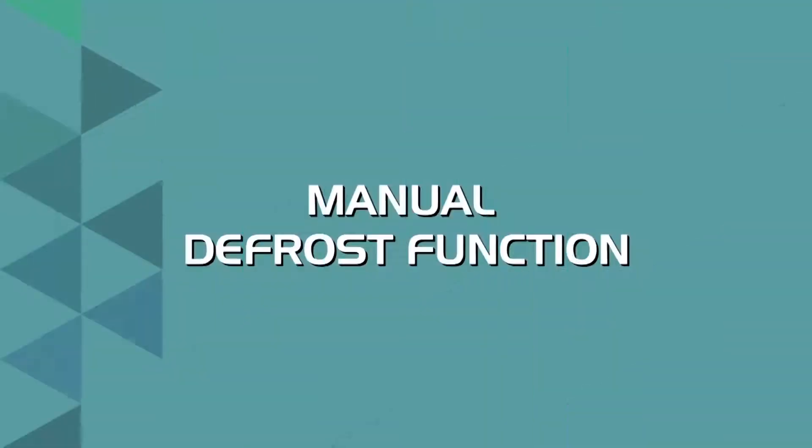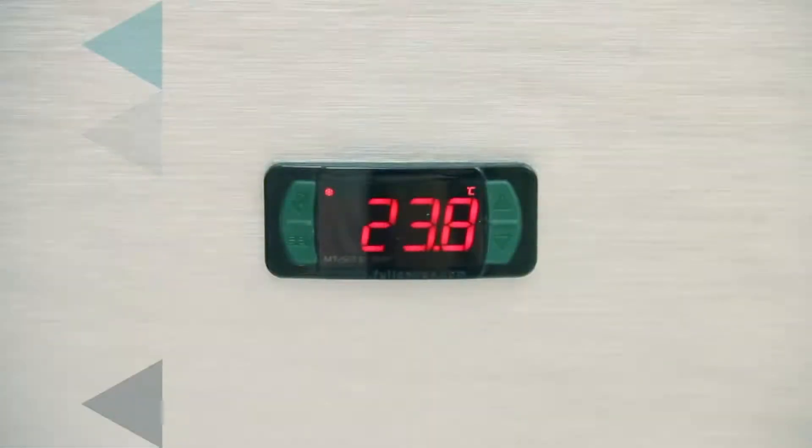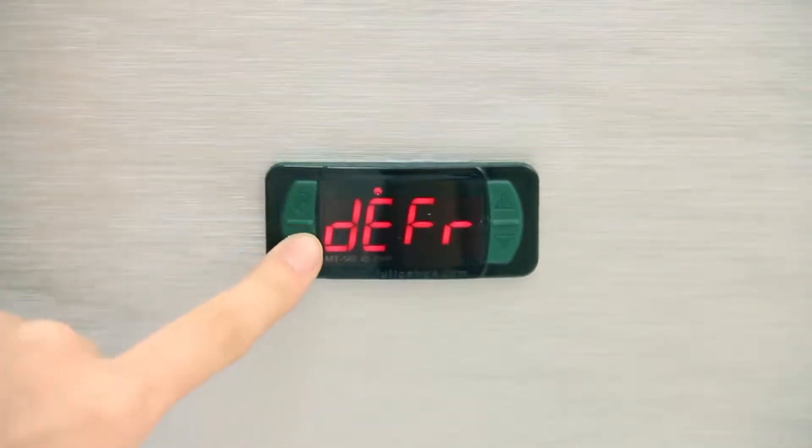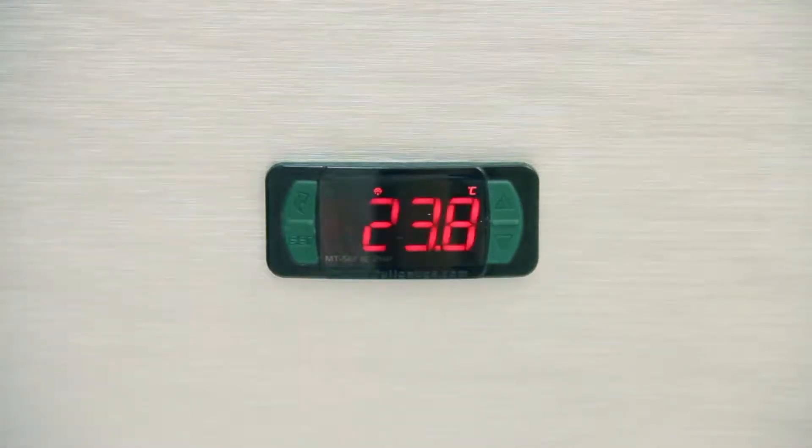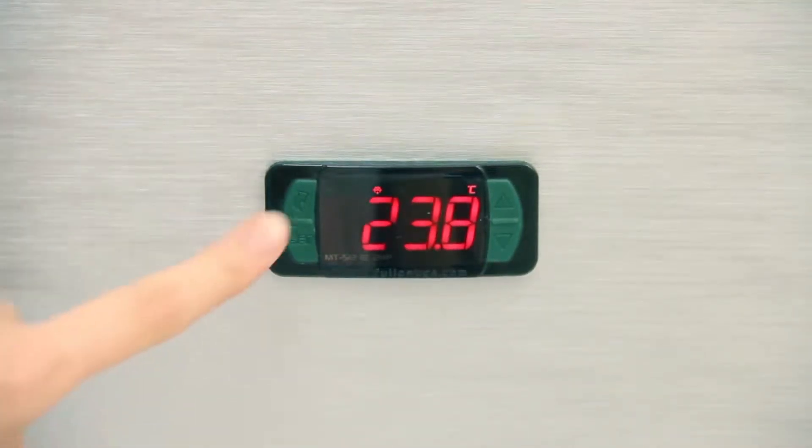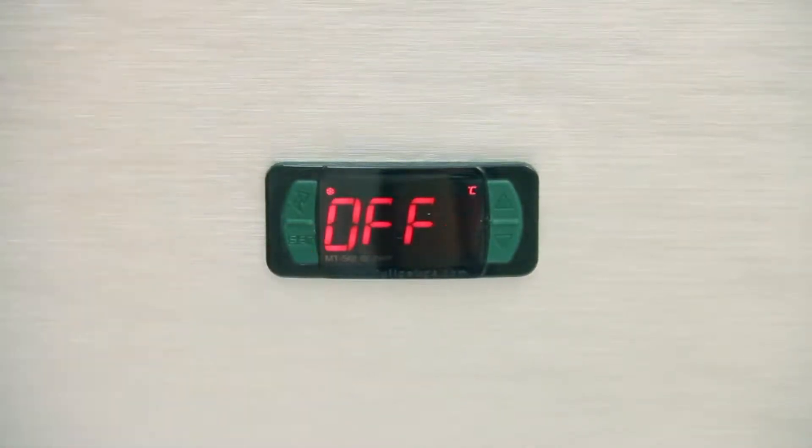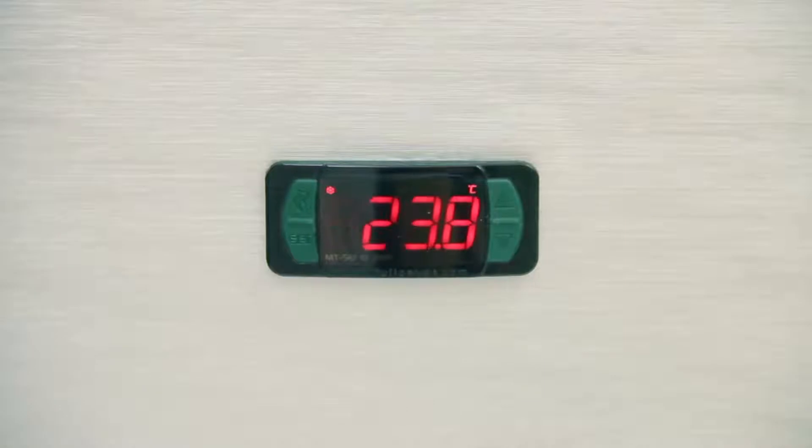Manual defrost function: The manual defrost is achieved by compressor shutdown. Access the function with the FlatTech key. Press set. The cooling icon will turn off and the defrost icon will be shown. To reactivate cooling, repeat this procedure. The defrost icon will turn off and cooling will be shown.